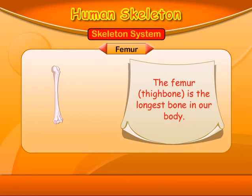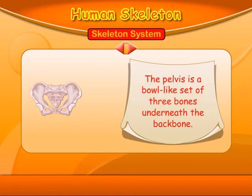Femur: the femur, or thigh bone, is the longest bone in our body. Pelvis: the pelvis is a ball-like set of three bones underneath the backbone.